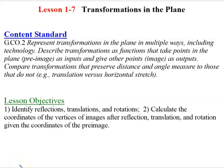Today's lesson is 1-7, and we're going to be talking about transformations in the plane. My goal for you today, as you can see in my objectives, is I want you to be able to identify the three types of transformations we're going to talk about today: reflections, translations, and rotations. That'll be the first part of our lesson, and then we're going to look at how to calculate the coordinates of the vertices of the images after these transformations have taken place.